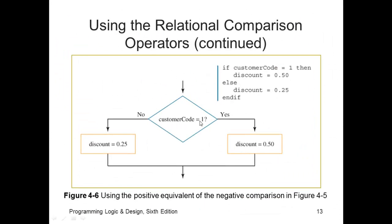Customer code is equal to 1, yes, discount's 0.5. Customer code not equal to 1, discount 0.25. Look at the pseudocode. Now, I'm going to back up a slide.